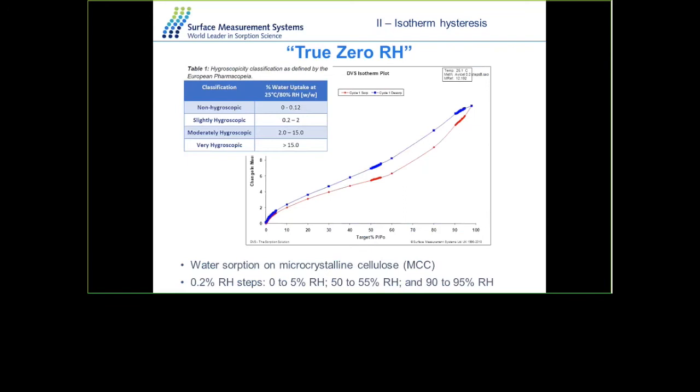The accuracy of the SMS controllers means you can collect data at small intervals, like 0.2% relative humidity steps. There is no reason why you can't collect smaller step relative humidity points all the way through the isotherm.